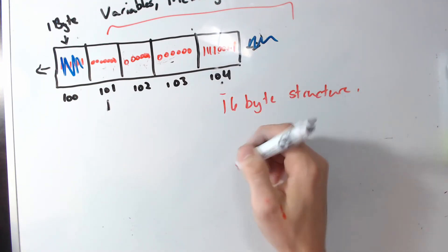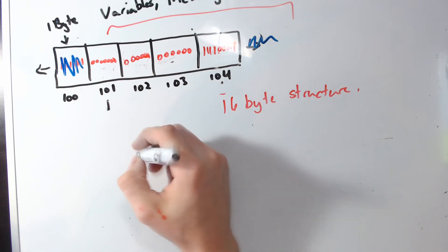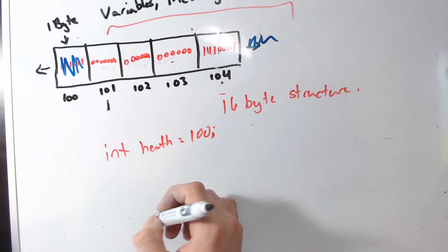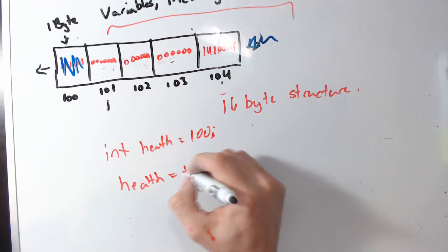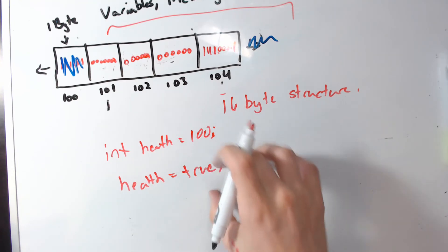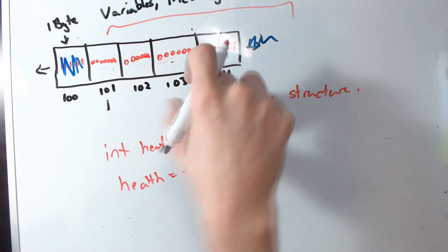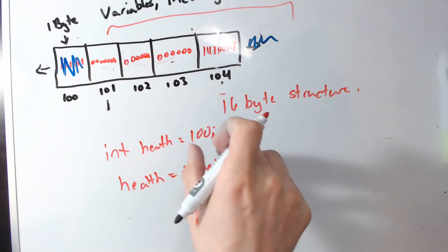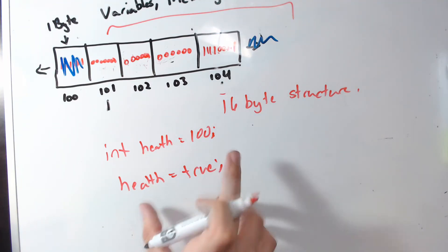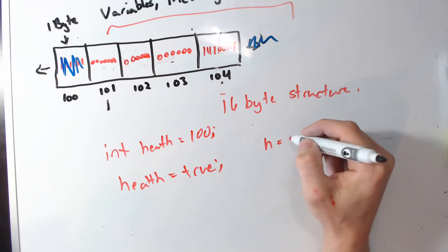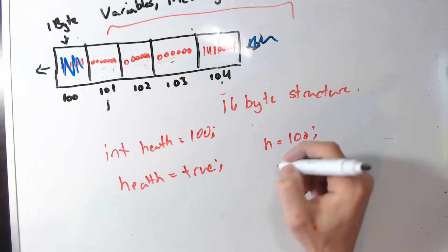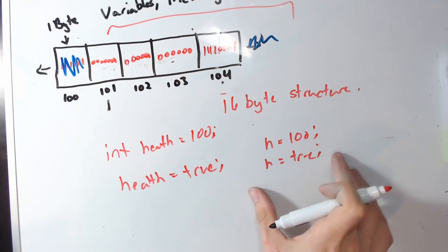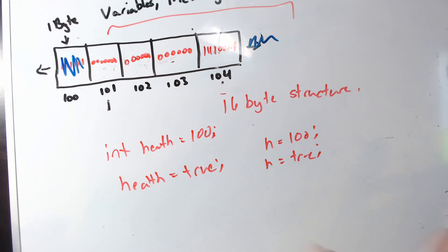The advantage this gives us is being able to reassign variables freely. In Java, if you declare int health equals 100, you couldn't later assign health to true, because a boolean takes one byte and an integer takes four bytes — that would give you an error. But in Game Maker you don't think about it: health equals 100, then later health equals true. Since all data types take up the same amount of space, this just works.